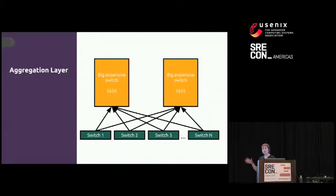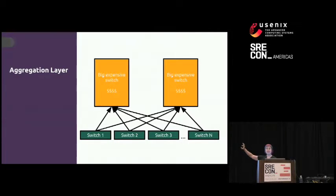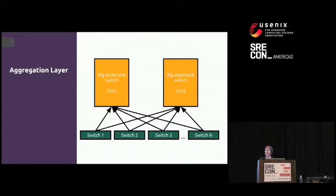These cheap switches are usually in the $2,000 to $5,000 range. How CLOS is actually connected is incredibly complex, so buy a friendly network engineer or me a beer later tonight and I can draw it out for you on a napkin.